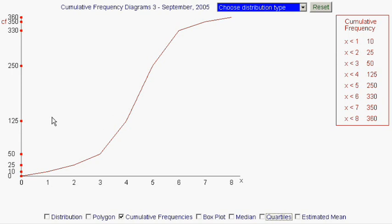To recap, to find the median, we find the halfway value on this scale, which is the 180th value, and we draw a line across to the curve and read down, and we read our median value off the bottom scale, in this case 4.44.